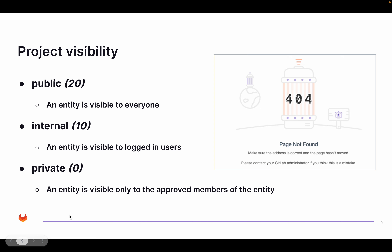Then you have project visibility. There are three types: public, internal, and private — each assigned a number, so if you use the API you use the number instead of the name. Visibility is based on access rights: a public project can be seen by an anonymous user without logging in; internal projects are only visible to logged-in users; and private projects are only visible to approved members who have been given specific access to that project or group.